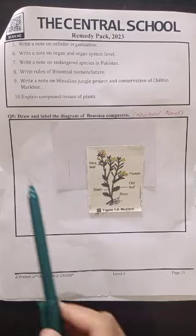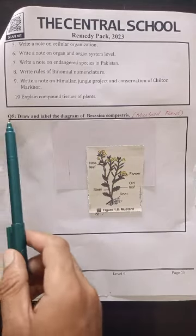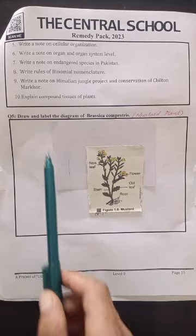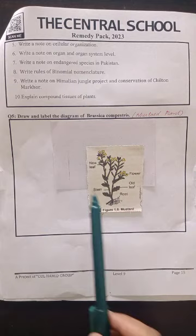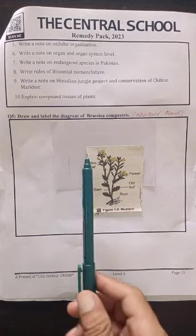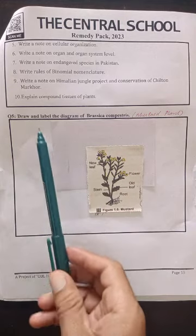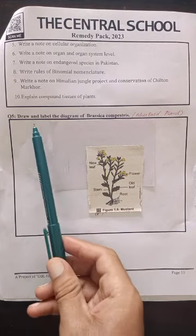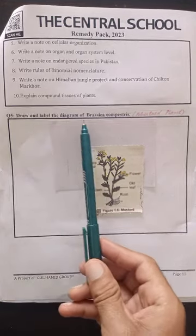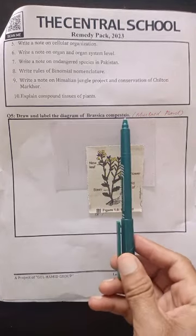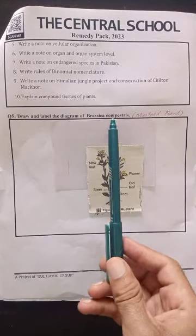Assalamualaikum students. This is question number 5 on page number 15 of the biology 9th class assignment section: draw and label the diagram of Brassica compressors.